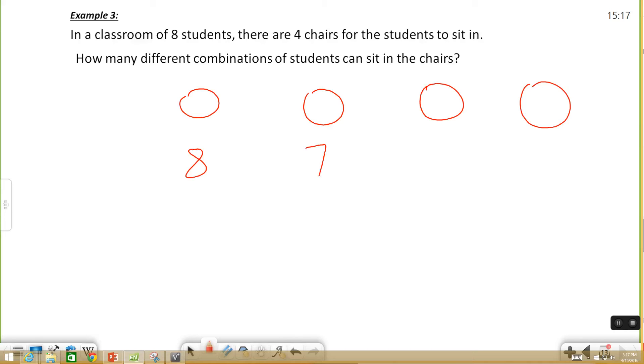What about that third chair? Well now there's only six students and that fourth chair there's only five students. So now you know the number of students that could possibly sit in there. We can use the fundamental counting principle and multiply these numbers together.